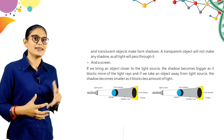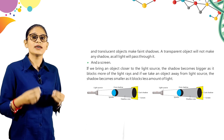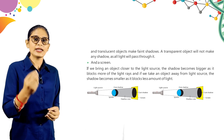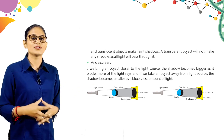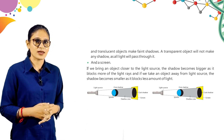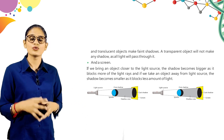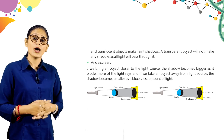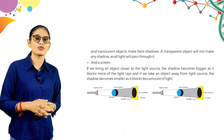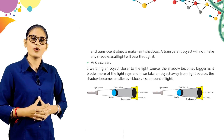A screen is also needed to see a shadow. If we bring any object closer to the light source, the shadow becomes bigger as it blocks more light rays. If we take any object away from the light source, the shadow becomes smaller as it blocks less light. If you bring an object very close to the light source the shadow will be very big — because it blocks more light. If you move it away, the shadow becomes smaller.